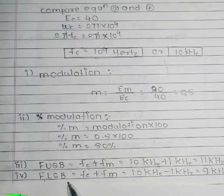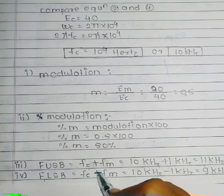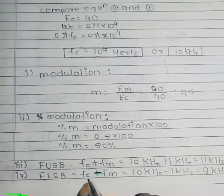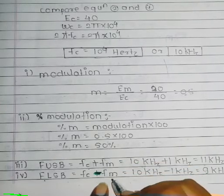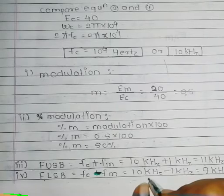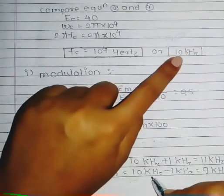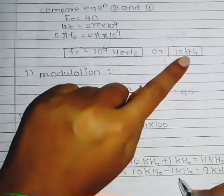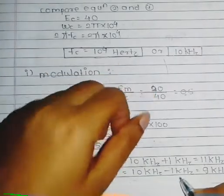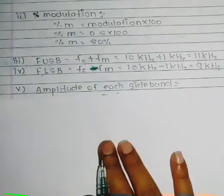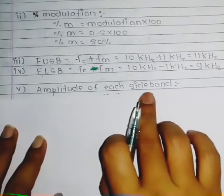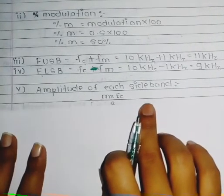The frequency of the lower sideband is the difference of carrier frequency and modulation frequency: FC − FM = 10 kHz − 1 kHz = 9 kHz.